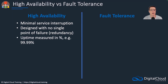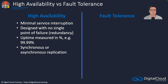With high availability, we measure it in terms of uptime, and it's a percentage number. So we've got 99.99% here, meaning 99.99% of the time the application should be available. We can use synchronous or asynchronous replication here.